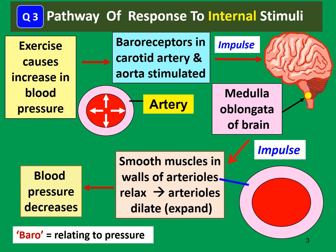In order to understand and write the essay answer, we need to know the pathway of response to internal stimuli. For example, when Sonia exercises, her blood pressure increases — so exercise caused an increase in blood pressure. What is the stimulus here? Yes, the stimulus is the increase in blood pressure due to the exercise. What is the receptor that can detect the change in blood pressure, according to what you have studied in the first chapter of Form 5? Yes, the name of the receptor is the baroreceptor. The baroreceptors are in the carotid artery and aorta — the two arteries — and they are stimulated when they detect the change in blood pressure.